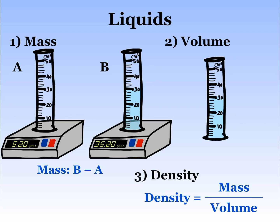To find the mass of the liquid alone, take your first reading and subtract it from your second one. Now record the volume of the liquid in the measuring cylinder. Finally, use your results for mass and volume in the density formula to find the density of the liquid.